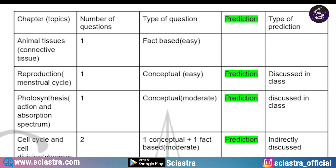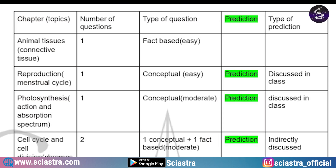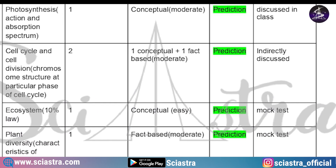As you can see in the document, one question came from animal tissues — specifically from the topic of connective tissue — it was a fact-based easy question and we did not predict this one. The second question was from reproduction, on the menstrual cycle — a conceptual easy question that was already predicted and discussed in class. Then one question came from photosynthesis on the topic of action and absorption spectrum — a conceptual moderate-level question that was already predicted and discussed in class.